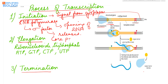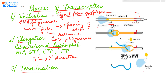After sigma factor is released, the core polymerase carries out elongation or polymerization. Polymerization occurs in the 5 prime to 3 prime direction with the help of ribonucleoside triphosphates: adenosine triphosphate, guanosine triphosphate, cytidine triphosphate, and uridine triphosphate. The nucleotides are added on the basis of complementarity. Elongation continues until the termination signal is reached.